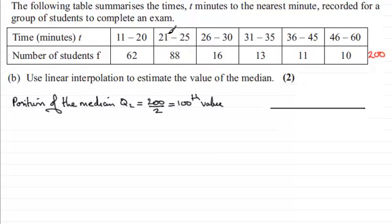Well, clearly it's going to be in this second class interval. 62 values here, 62 students if you like, then took below 20.5 minutes to complete the exam. Whereas 62 plus 88 gives us a total of 150. So clearly the hundredth student is going to be somewhere in that class interval.